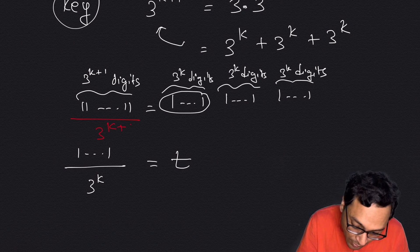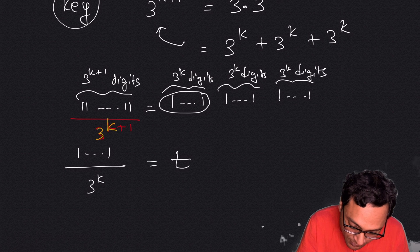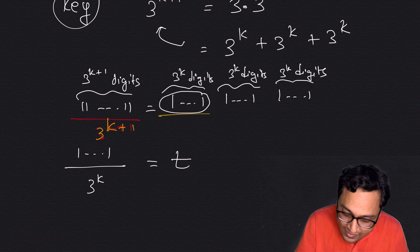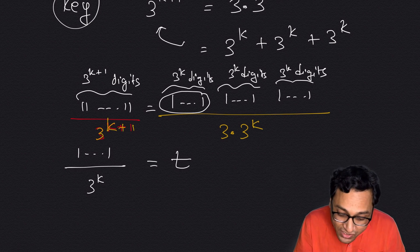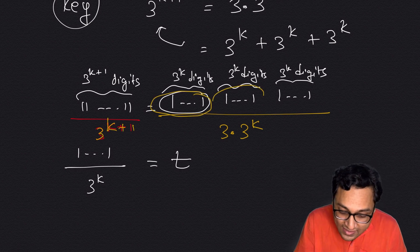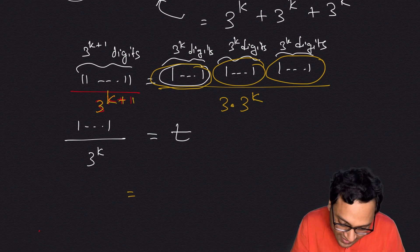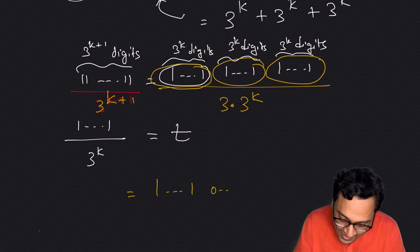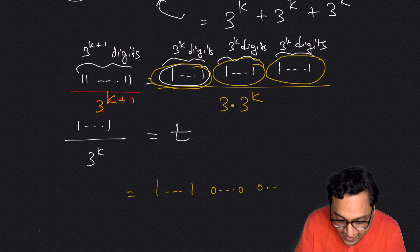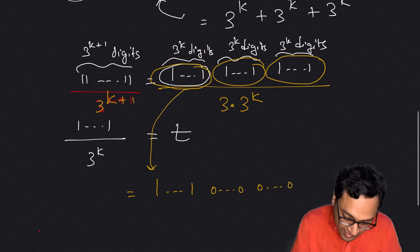If you divide the entire number by 3^(k+1), that's dividing by 3 times 3^k. You can write the number as: 3^k ones followed by 3^k zeros and 3^k zeros for the first block, then the second block, and so on.